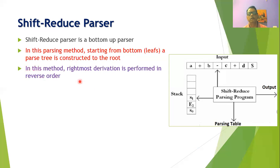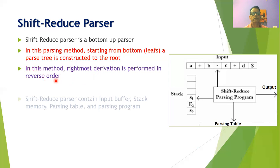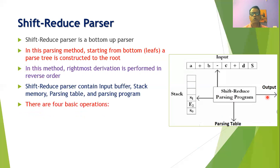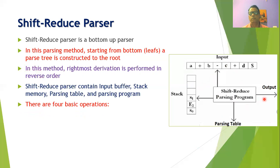In this method the rightmost derivation is performed in reverse order. The shift reduce parser contains an input buffer, a stack memory, a parsing table, a parsing program, and at the output a parse tree is generated. The input buffer stores the input sequence of tokens, the stack stores different grammar symbols, and the parsing table shows which action to perform.